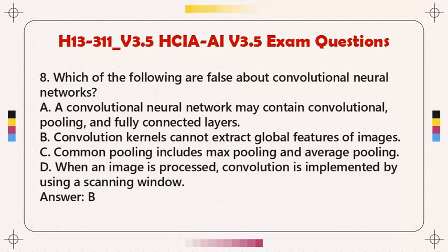Question 8: Which of the following are false about convolutional neural networks? A. A convolutional neural network may contain convolutional, pooling, and fully connected layers. B. Convolution kernels cannot extract global features of images. C. Common pooling includes max pooling and average pooling. D. When an image is processed, convolution is implemented by using a scanning window. Answer: B.